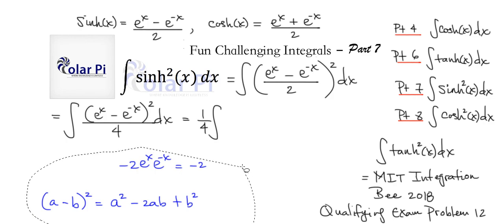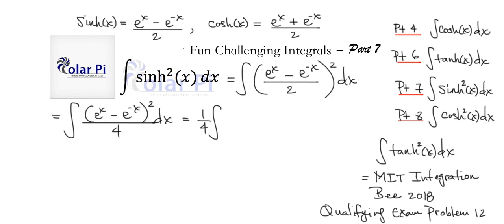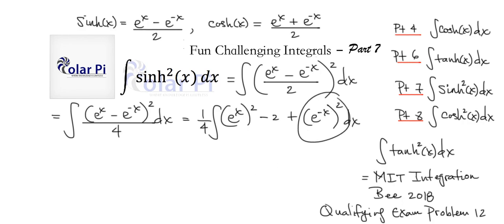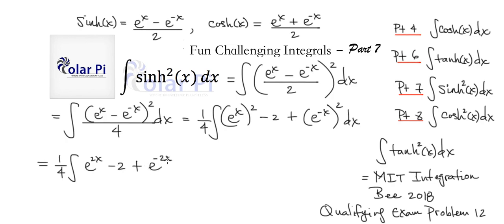The middle term is going to turn into minus 2. I'd like you to pay attention to this middle term — it's going to be minus 2 times e to the x times e to the negative x. By exponent rules, that's e to the 0, which is 1, so the middle term is just minus 2. Otherwise, e to the x squared becomes e to the 2x, and e to the negative x squared becomes e to the negative 2x. So we've got e to the 2x, minus 2, plus e to the negative 2x, all divided by 4, dx.